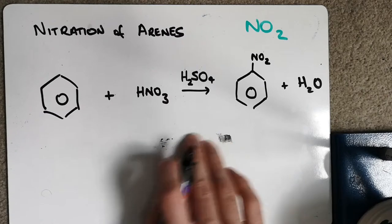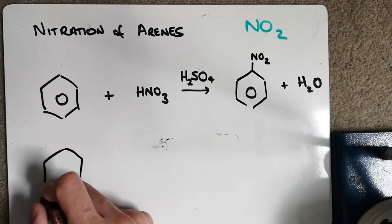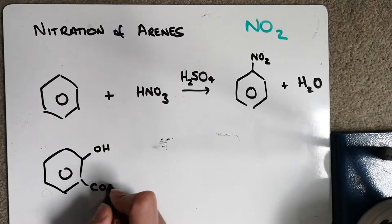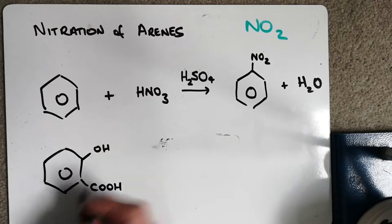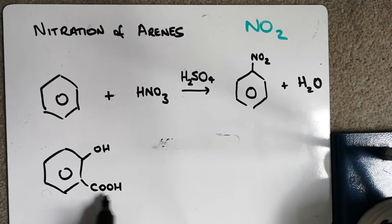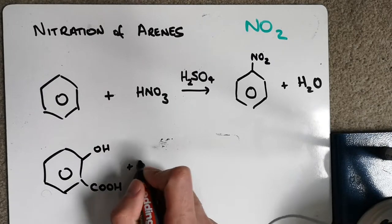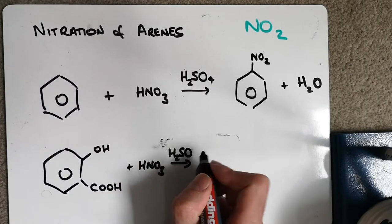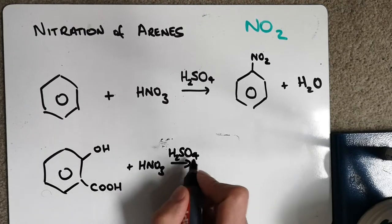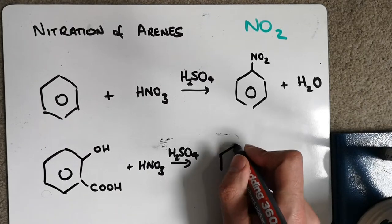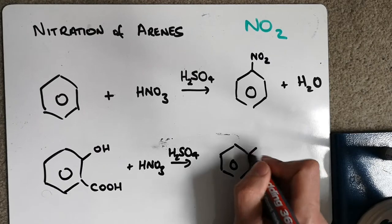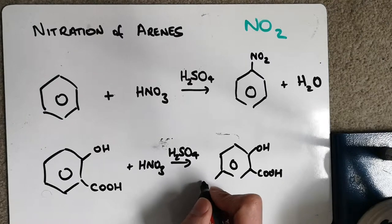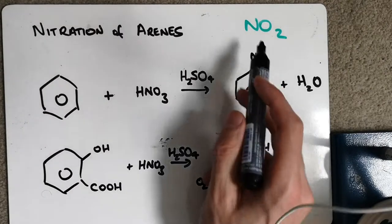Now this can be done with any arene reaction. So for instance, it doesn't have to just be a benzene ring. It could have other side chains on as well. So here I've got an alcohol side chain and a carboxylic acid side chain. I can do the same reaction. So HNO3, which is nitric acid, and a catalyst of H2SO4, which is sulfuric, will form NO2 as well.